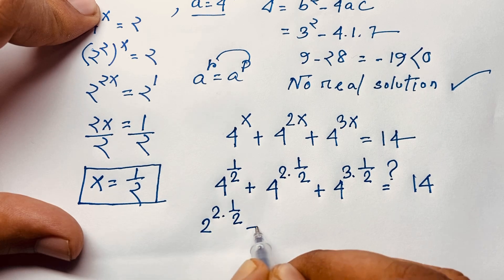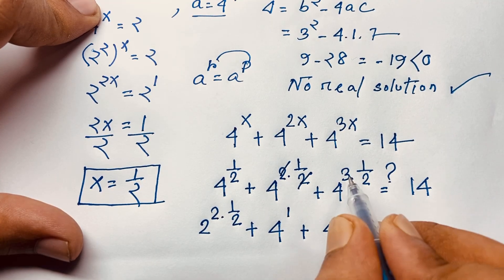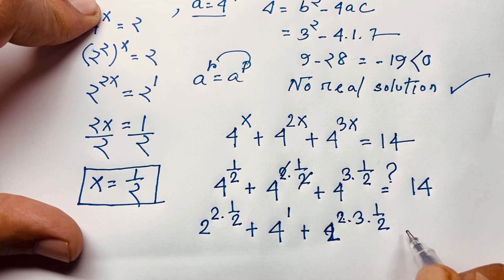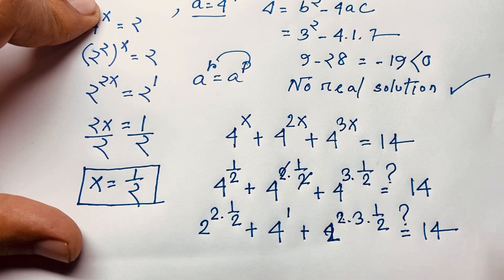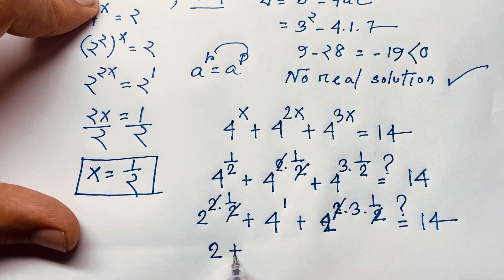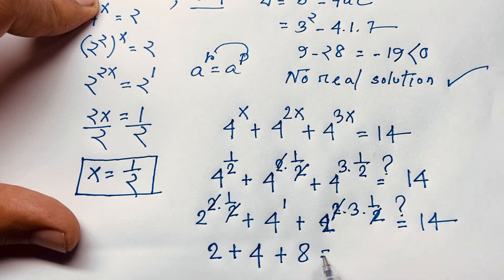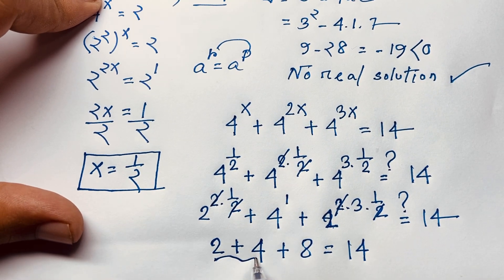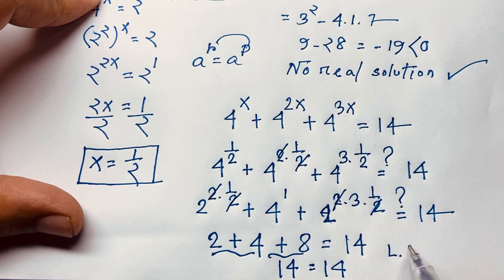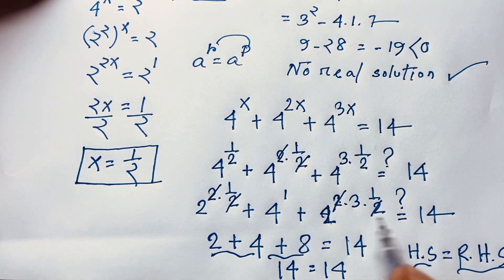4 to the power 1/2 equals 2. 4 to the power 1 equals 4. 4 to the power 3/2 equals 2 squared times 3/2, which gives 2 to the power 3 equals 8. So we have 2 plus 4 plus 8 equals 14. Left-hand side equals right-hand side, confirming x equals 1/2 is our final answer.